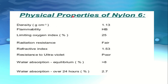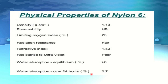Physical properties of nylon 6: density is 1.13 g/cm³; flammability is HB; limiting oxygen index is 25 percent; radiation resistance is fair; refractive index is 1.53; resistance to ultraviolet is poor; water absorption at equilibrium is less than 8 percent; water absorption over 24 hours is 2.7 percent.